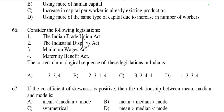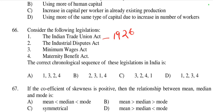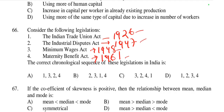Question 66: Find the correct chronological sequence of the following legislation — Indian Trade Union Act, Industrial Dispute Act, Minimum Wage Act, and Maternity Benefit Act. The Indian Trade Union Act came in 1926, Industrial Dispute Act in 1947, Minimum Wage Act in 1948, and Maternity Benefit Act in 1961. So the chronological order is 1, 2, 3, 4 — and option D is right.